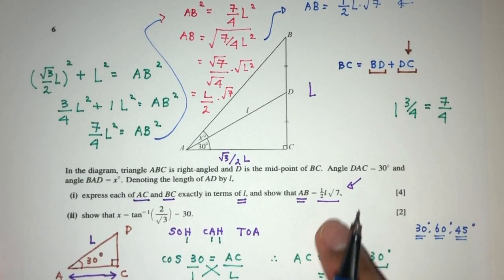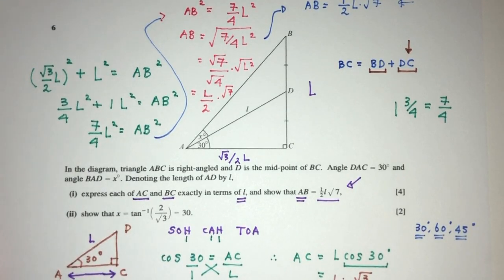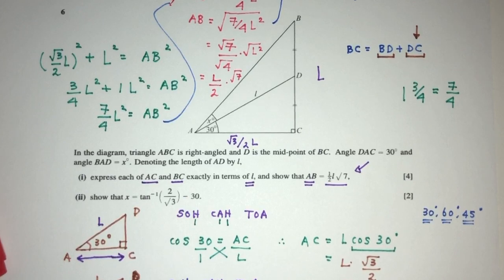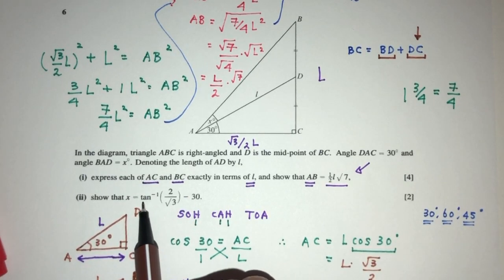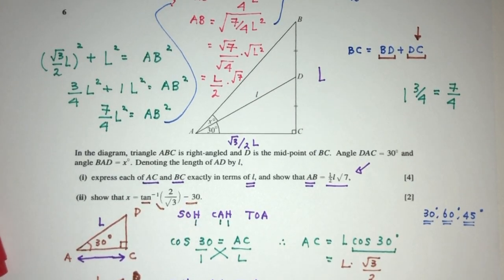We realize AB now equals half L times root 7, which is the value shown as required for side AB. That will be part one of the question. Now let's move on to part two of the question. We have to show that the value of x is given by this expression.